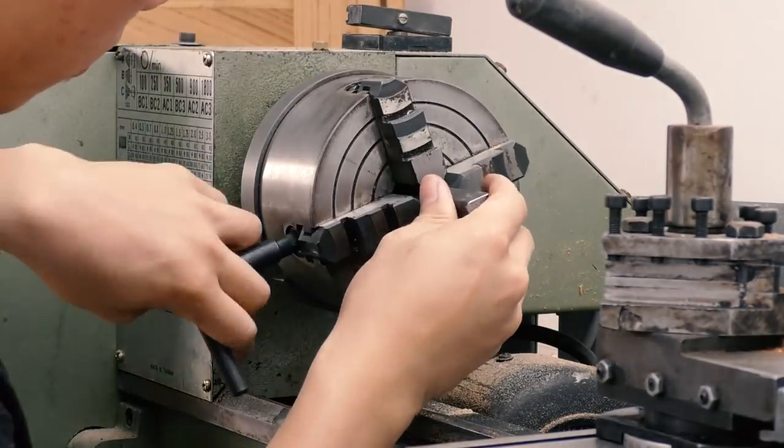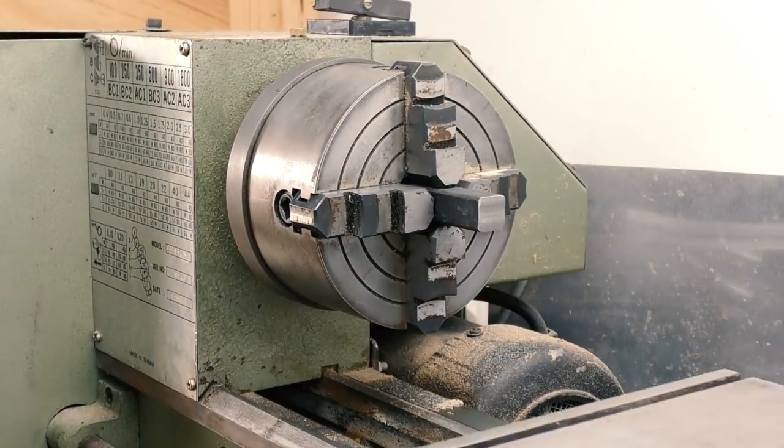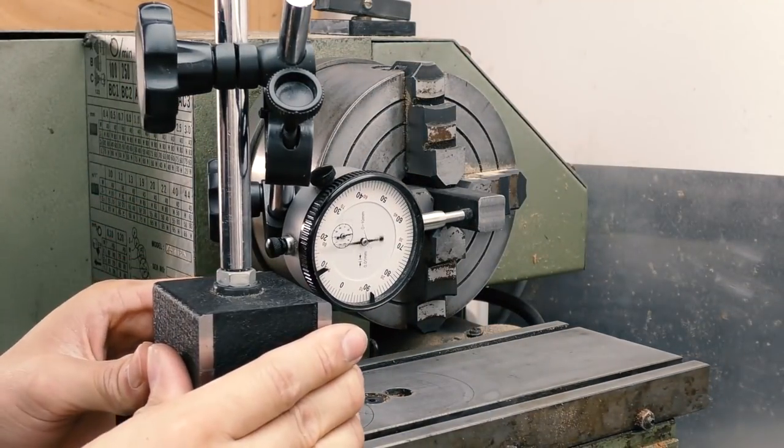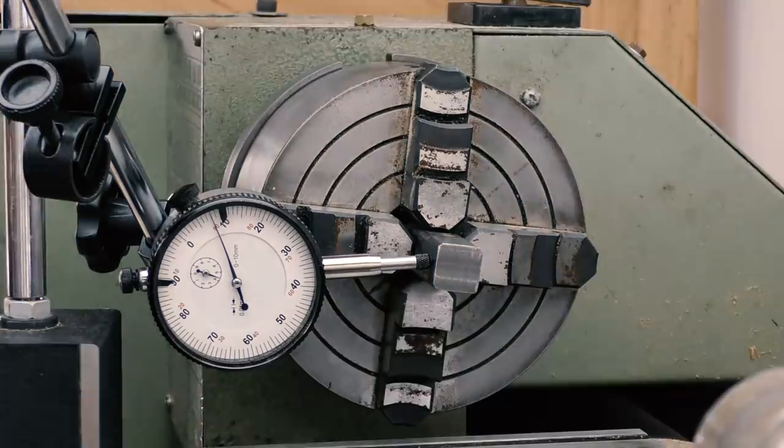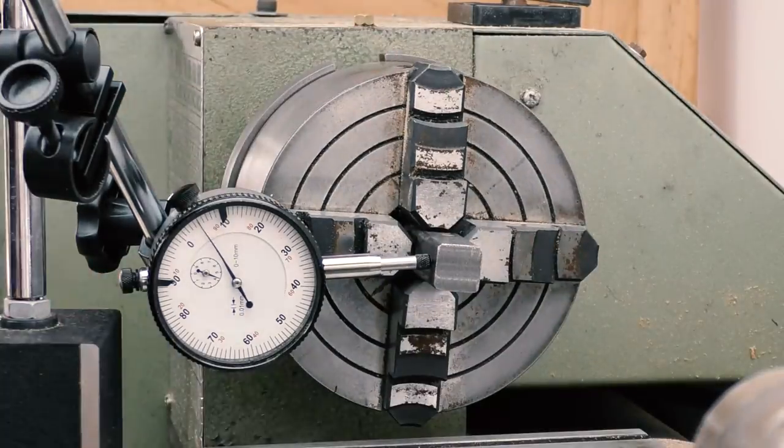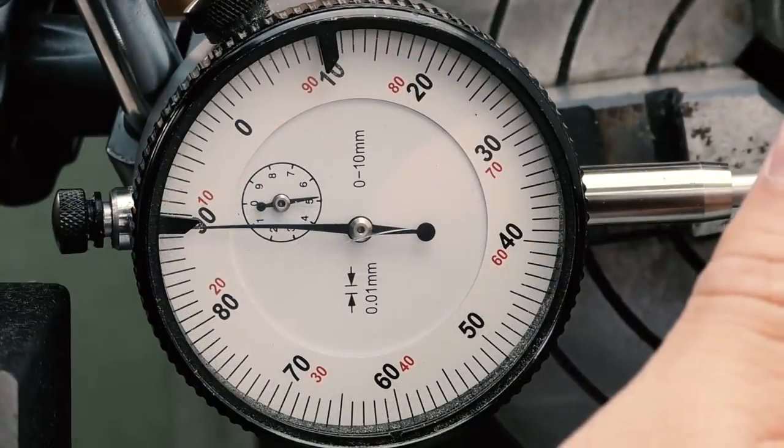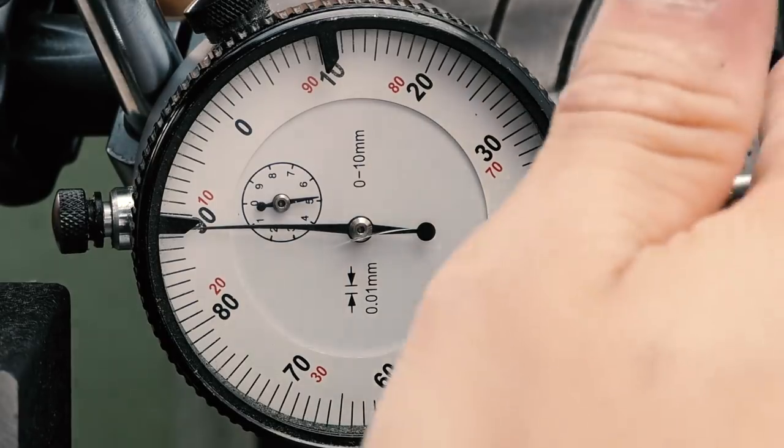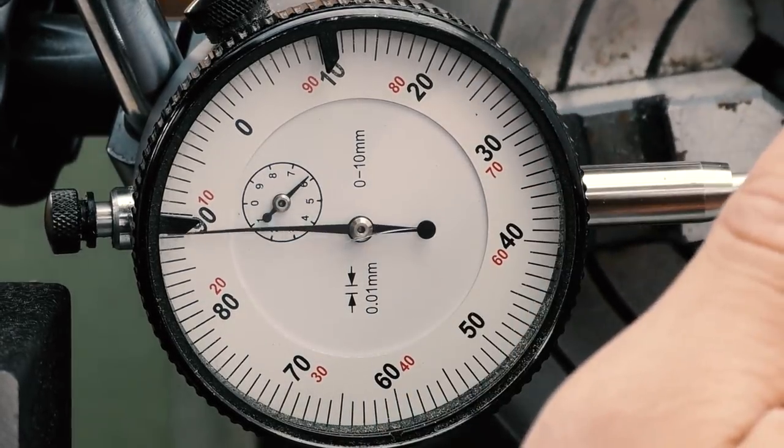Since I do not have an auto-centering four-jaw chuck or some special collets for centering square stock, I am doing it manually using my dial indicator. At first, I accidentally adjusted the blank to be whole millimeters off-centered, as I only paid attention to the long hand and not the short hand.